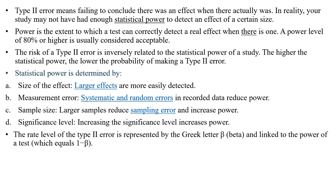Type 2 error means failing to conclude there was an effect when there actually was one. Your study may not have had enough statistical power to detect an effect of a certain size. Statistical power refers to the extent to which a test can correctly detect a real effect when there is one. A power level of 80% is considered acceptable. The risk of Type 2 error is inversely related to the statistical power of a study — the more statistical power, the less probability of a Type 2 error. Factors include the size of the effect.